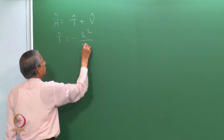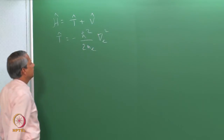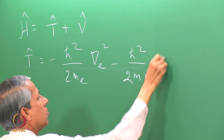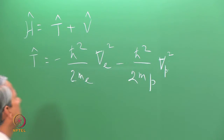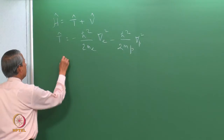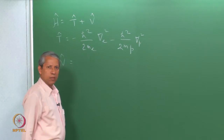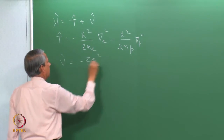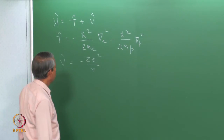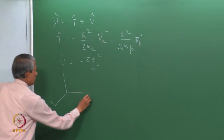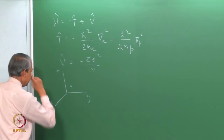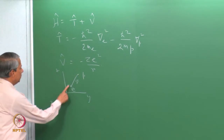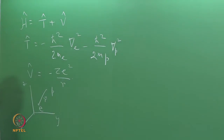This gives the kinetic energy operator for the electron and the kinetic energy operator for the proton. The potential energy V is the Coulomb attraction between the two, given as minus Ze² divided by r, where r is the distance between the electron and proton. In a coordinate system with x, y, and z, if the electron is here and the proton is here, this distance is r, and for each coordinate we have the corresponding operators.